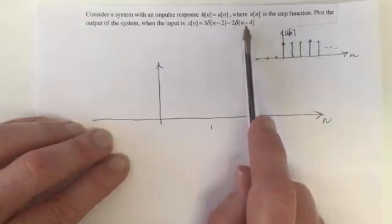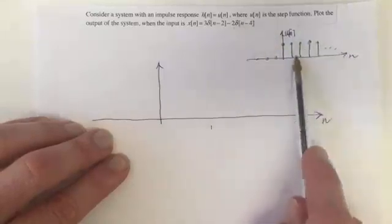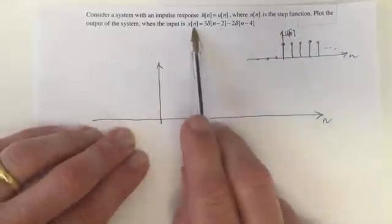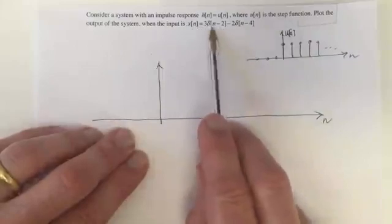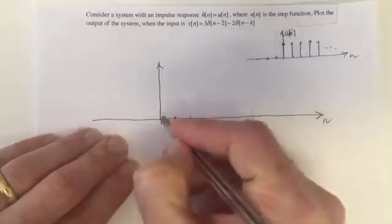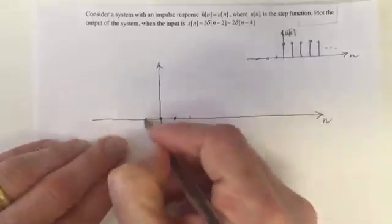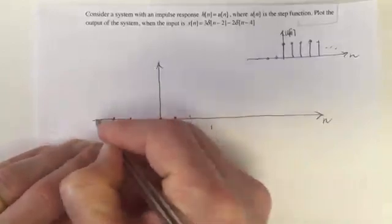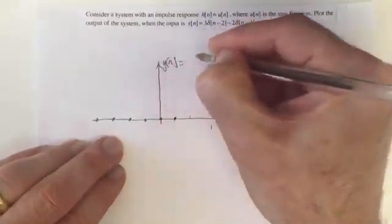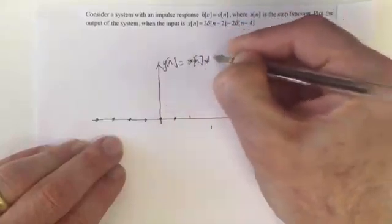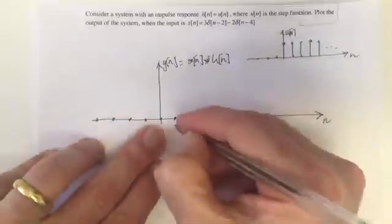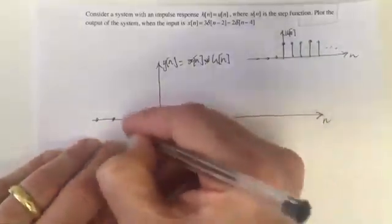And by the definition of impulse response, this is the way the system responds to an impulse. So we know that if there's no input to our system before n equals 2, then the output of our system is going to be 0 for all the values of n which are less than 2. So all of these are 0. So this is our output which equals x(n) convolved with h(n). We know that it's 0 for all values less than 2.